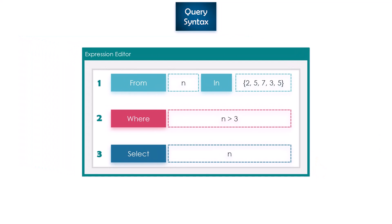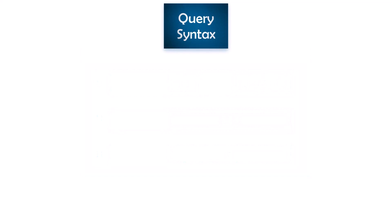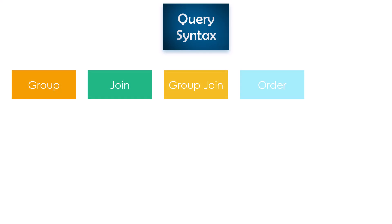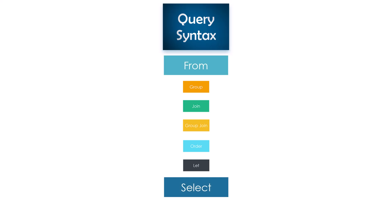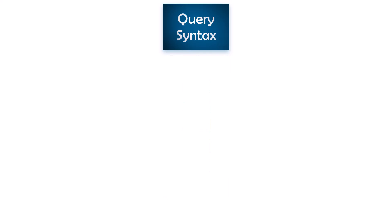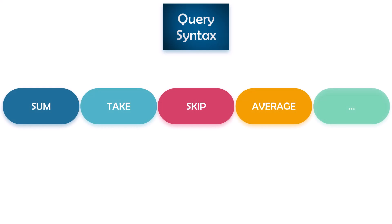The standard structure uses from, where, and select operators. We can also use other operators in query syntax: group, join, group join, order, and let — only these operators can be used in query syntax, added between the from and select operators. We can also use any operator more than once in a query. However, many other operators like sum, take, skip, and average cannot be used in query syntax — to use those, we have to use method syntax.